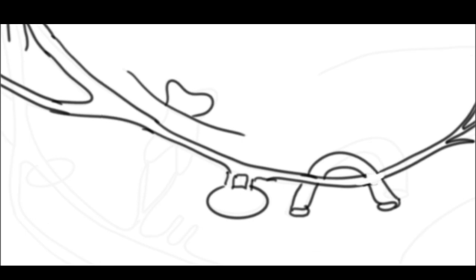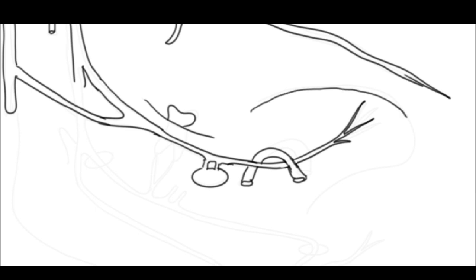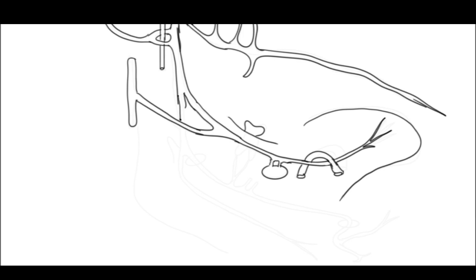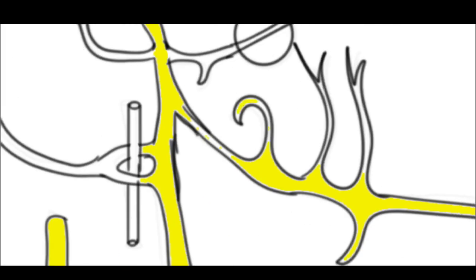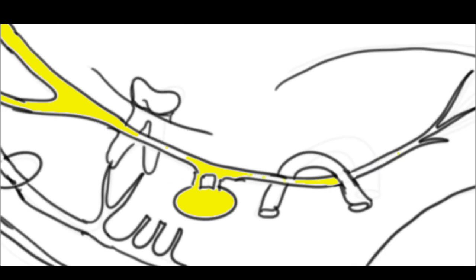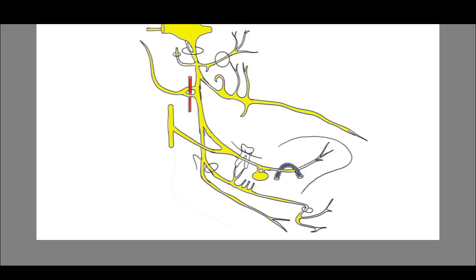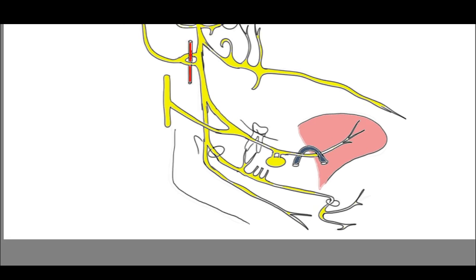The other two branches of the posterior division are the lingual and inferior alveolar nerves. The lingual nerve runs downwards and forwards and is soon joined by chorda tympani, a branch of the facial nerve. It then lies very close to the medial surface of the lower third molar teeth in contact with the mandible, hooks around the submandibular duct, and finally divides into terminal branches supplying the tongue. The inferior alveolar nerve descends and enters the mandibular foramen, giving out the mylohyoid nerve beforehand, then branches to all lower teeth, and exits as the mental nerve through the mental foramen.